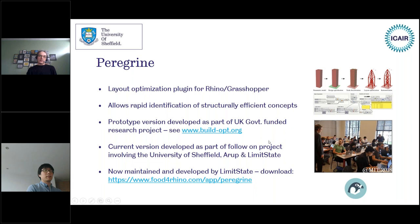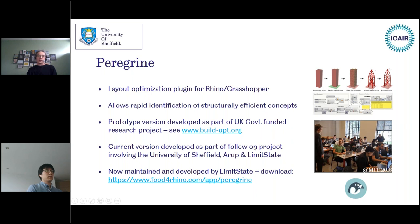Hopefully those of you joining us today are aware of Peregrine. This is looking at intermediate or advanced areas of usage. It's a layout optimization plugin for the Rhino and Grasshopper environment, allowing rapid identification of structurally efficient concepts. It was developed during a couple of projects, one UK government-funded project with more information at buildopt.org. The current version involves work with Arup and LimitState. The software is now maintained and developed by LimitState and you can download a copy at Food for Rhino.